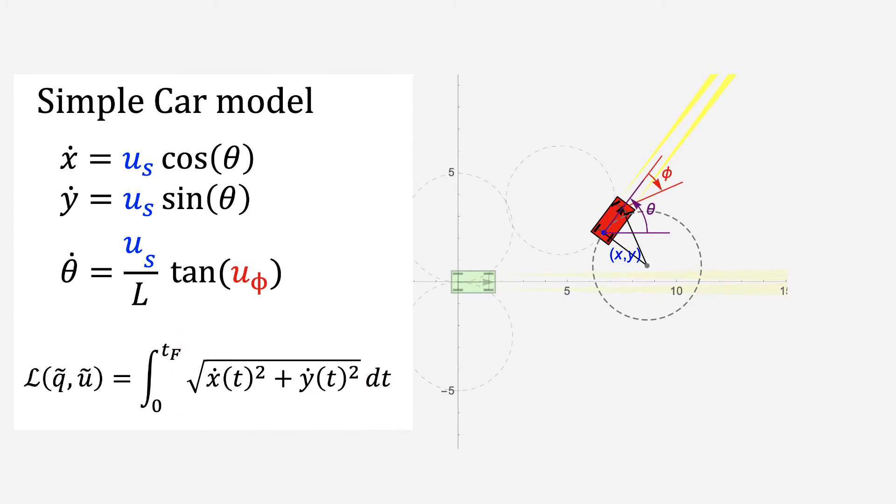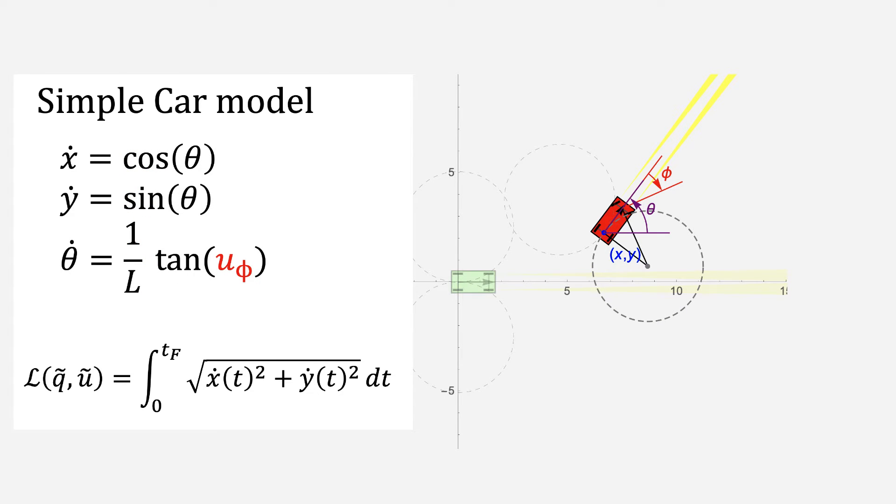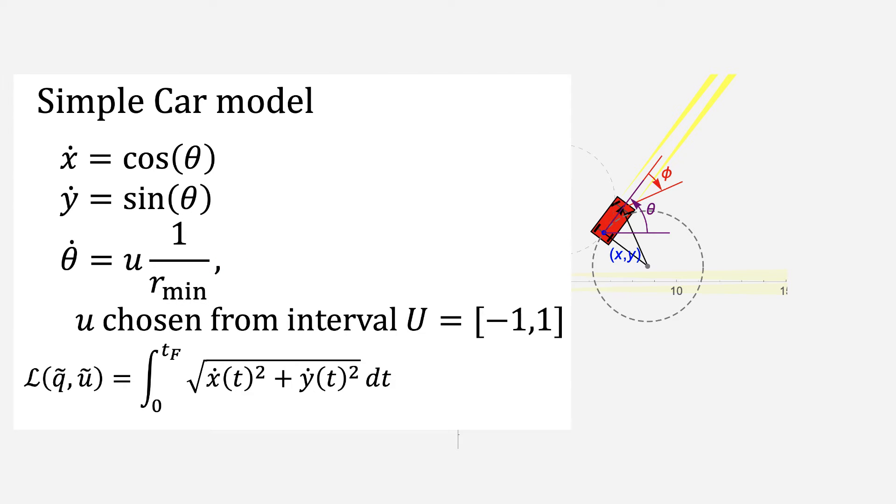We want to find the optimal control inputs, u tilde, that move the configuration from start to goal. Now since all we care about is path length and the maximum turning angle is not affected by speed, we simplify the problem by assuming we are always moving at constant speed. For simplicity, let that constant speed us be 1. We further simplify by having the control input u control the steering and restrict u to the interval negative 1 to 1.